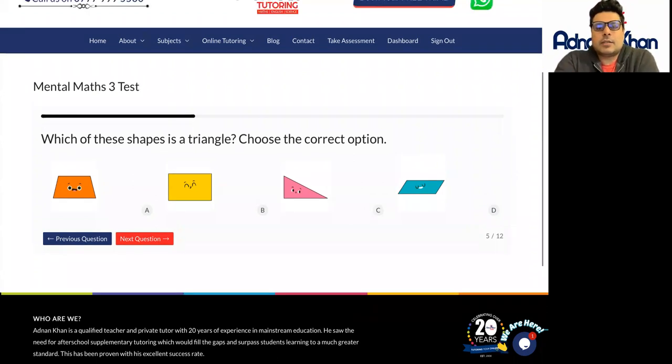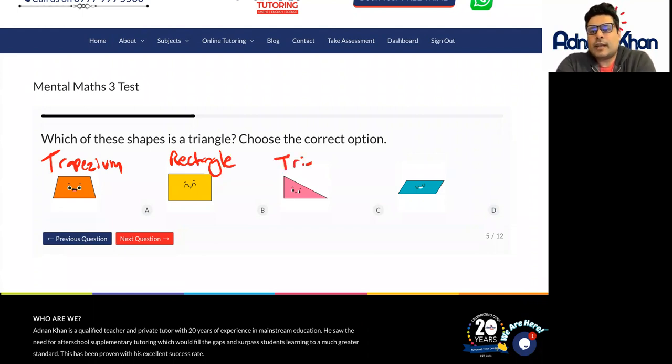And let's just write that down here. Trapezium. Shape B is a rectangle. Shape C is a triangle.